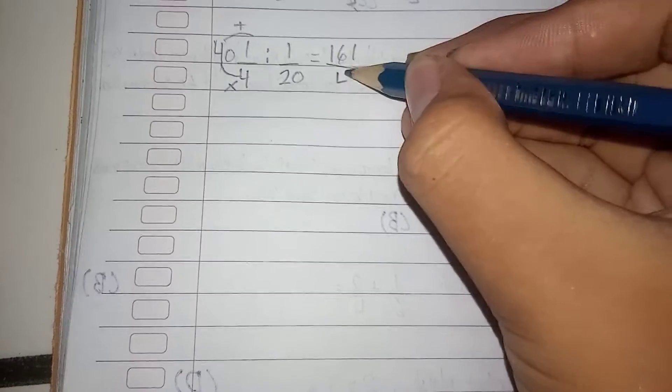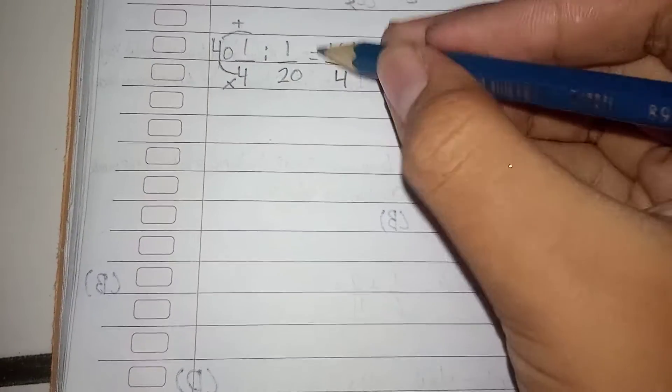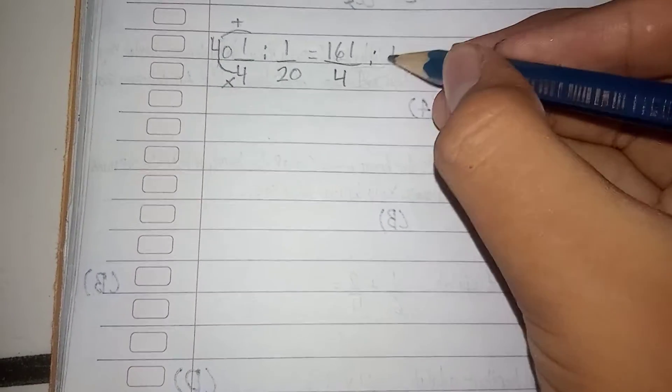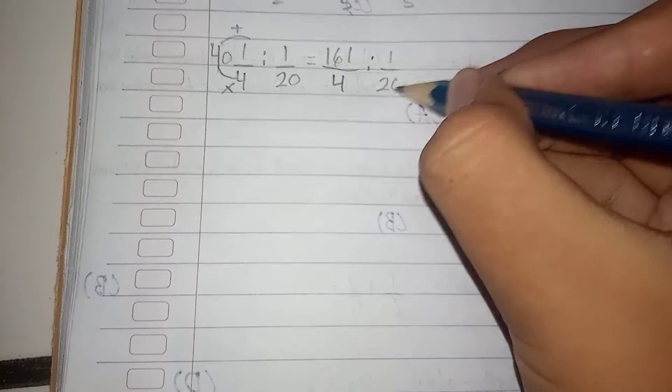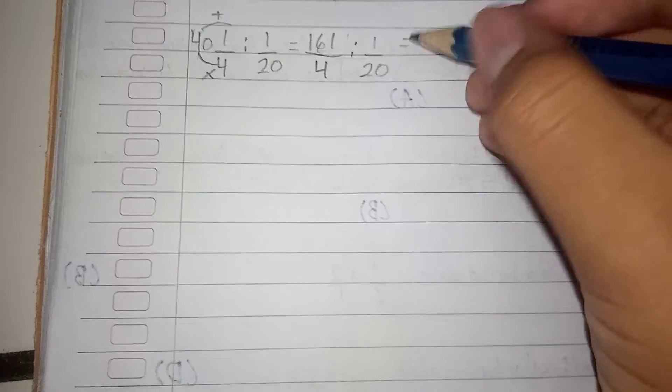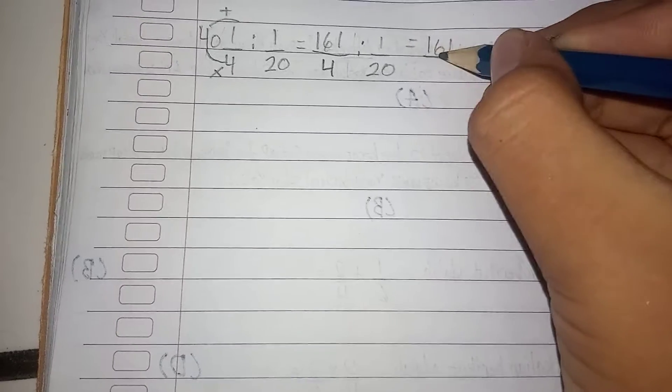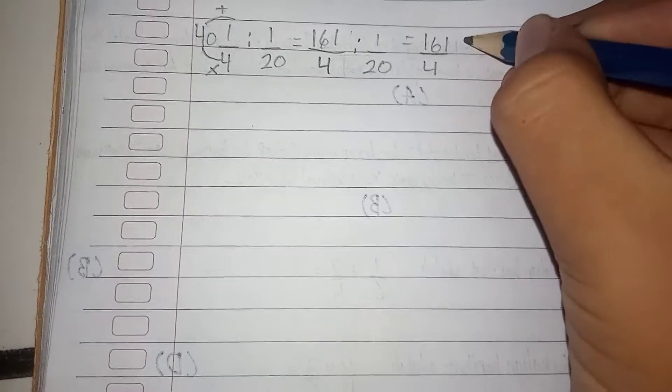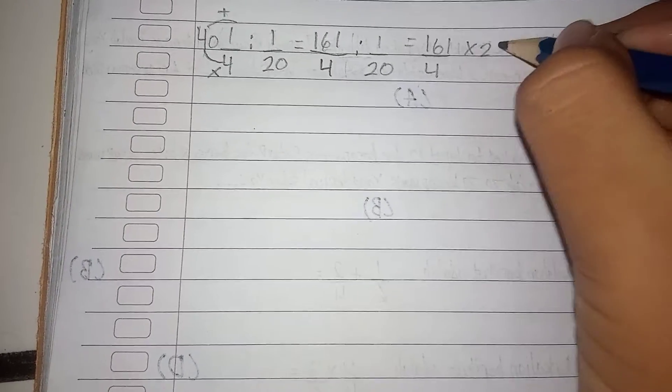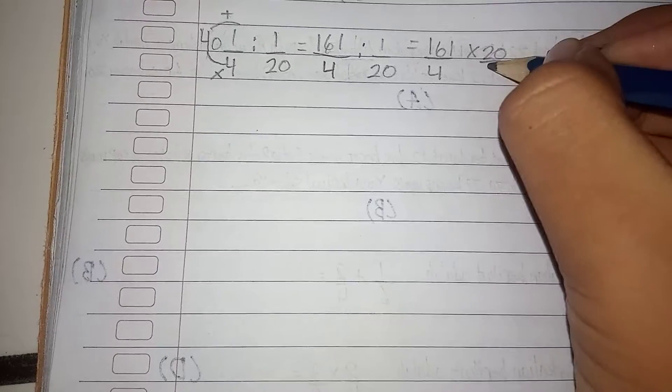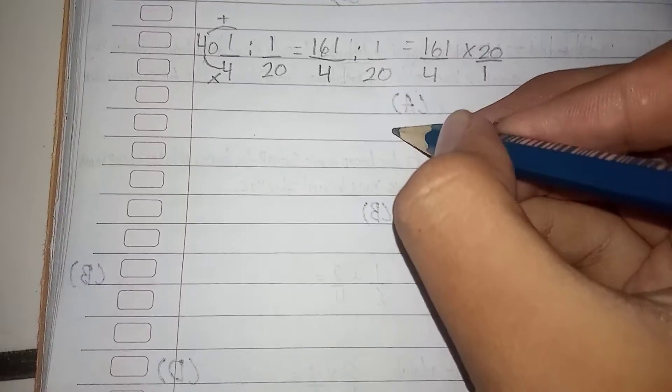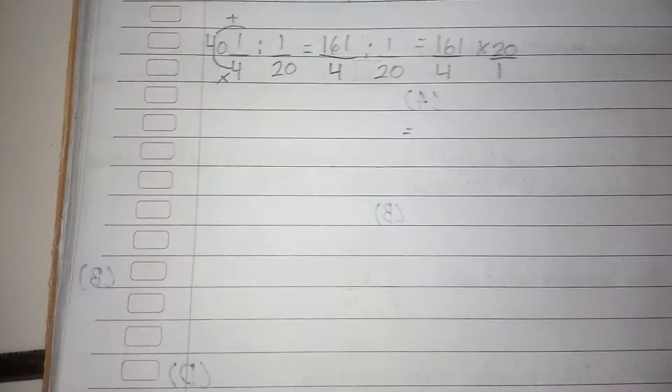...4. After that, let's divide that by this, so over 20. That's equivalent to 161 over 4 times 20 over 1. And it's going to be equal to...